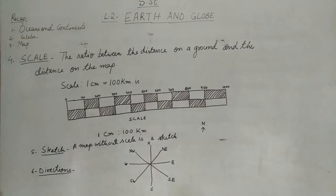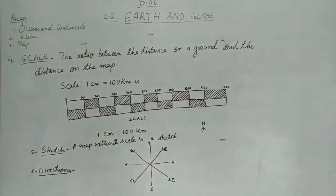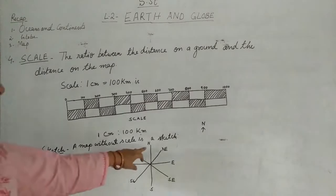Now next topic is directions. Most of you would have seen maps with an arrow with letter N. Can you guess what does this arrow and letter N represent? Well, the arrow and letter N represent the north direction in the map. In most of the maps you will see north at the top.